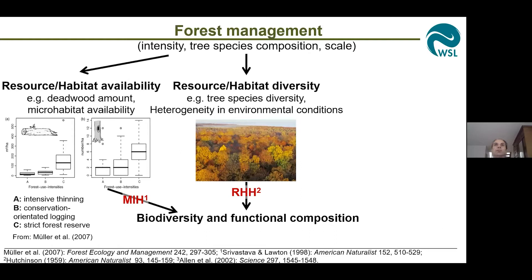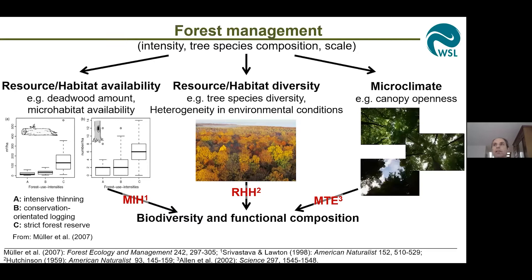The next pathway is resource habitat diversity. Management affects tree species diversity by focusing on mainly a few economically valuable trees and by affecting heterogeneity and environmental conditions. We expect that resource diversity provides more niches for species and so also enhances biodiversity, related to the resource heterogeneity hypothesis. Microclimate is also an important factor: forest management affects canopy openness, and we know that insect metabolism is temperature dependent, so temperature is seen as a major driver of biodiversity in insects. All this also affects ecosystem processes related to biodiversity, and we have to consider that all these effects can be scale dependent.